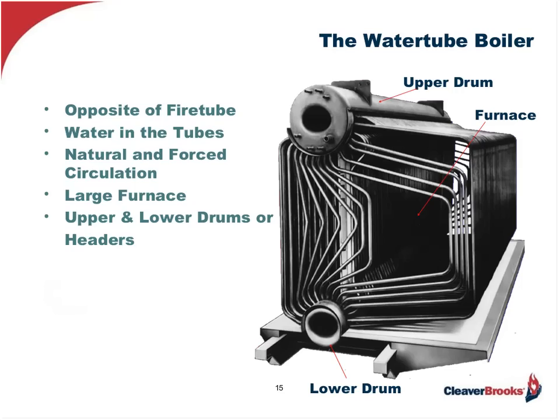The water tube boiler is just the opposite from the fire tube — the water is in the tubes and the fire and hot gases surround them. Many water tube borders on the market today have been designed to naturally circulate the water-steam combination through the tubes, utilizing properly sized tubes connected to drums or headers, providing the pressure density differentials required for natural circulation. However, there are other water tube designs which require forced circulation, incorporating their own pump, and in a steam application these are referred to as steam generators.